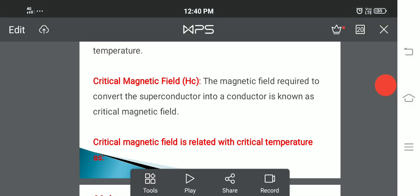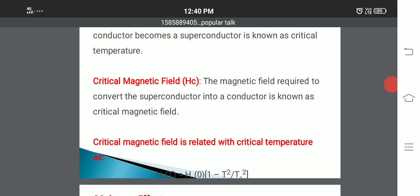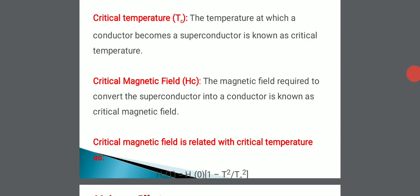So critical magnetic field is related with critical temperature as Hc of T is equal to Hc of 0 times 1 minus T square by Tc square.